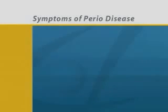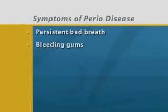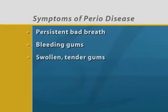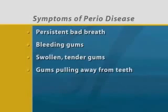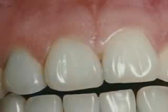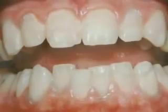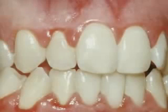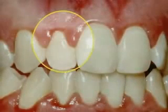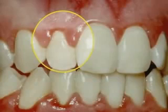If you have periodontal disease, you may have some of these symptoms. Notice the difference with early periodontal disease and moderate periodontal disease. You can see the red and swollen infection of the gums. Look especially close at the inflammation of the gums between the teeth — this is where periodontal disease usually starts.